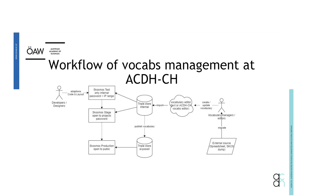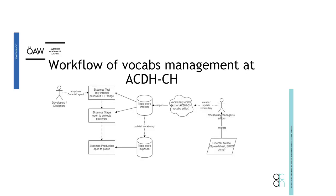The staging instance is meant for seeing vocabularies during development. When curators or a team is working on a vocabulary, we repeatedly ingest it into the internal triple store and it's visible through the staging instance to a closed circle of people. This gives an impression of how it really looks — it's better to see in COSMOS than to look at the raw SKOS file. It's a nice iterative process of refining the vocabulary, and when we're satisfied with the version it goes to production.